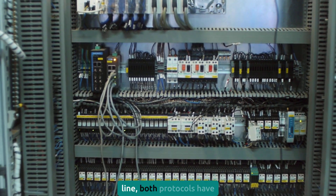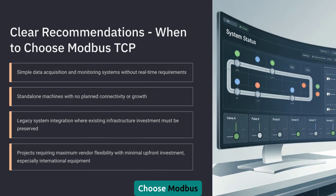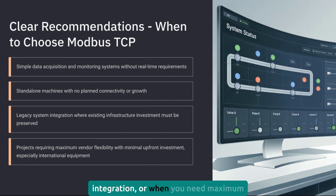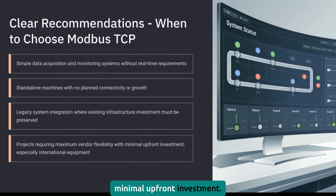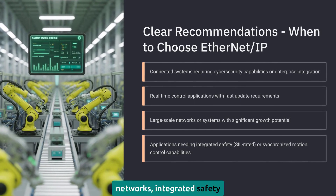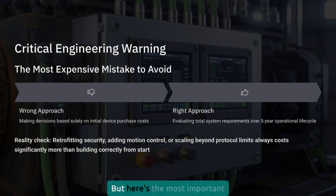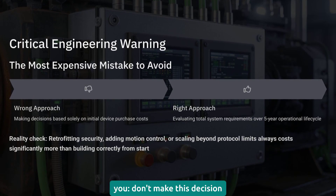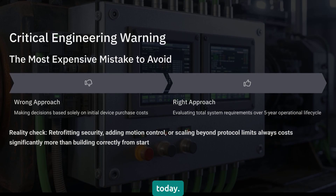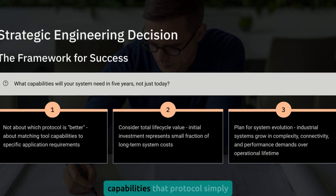Here's my bottom line: both protocols have earned their place in industrial automation, but they're tools for fundamentally different jobs. Choose Modbus TCP for simple data acquisition, standalone machines, legacy system integration, or when you need maximum vendor flexibility with minimal up-front investment. Choose EtherNet/IP for connected systems, real-time control, large-scale networks, integrated safety or motion, or any application where you might need native cybersecurity capabilities in the future. Most importantly: don't make this decision based solely on initial device costs. Think about where your system needs to be in 10 years, not just where it is today. The biggest mistakes happen when someone chooses the cheaper option up front, then discovers they need capabilities that protocol simply cannot provide.